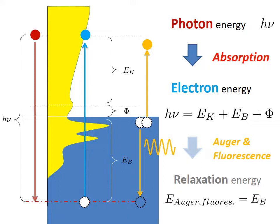Photoemission basically analyzes the energy of electrons excited by photons, not limited to soft or hard X-ray. Photon energy is defined by the beamline and electron energy is measured in a hemispherical electron energy analyzer at the end station. From the equation, we can evaluate the binding energy of the electron, which is expected to be the energy of the electron in the material before excitation. However, this is not really true because of many-electron interactions in the solid before and after excitation. Eventually, an energy shift of the electron involves the chemical information resulting from the material properties.